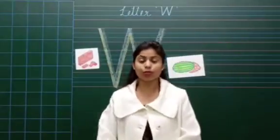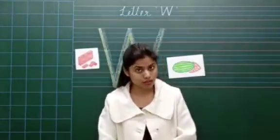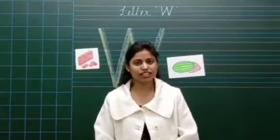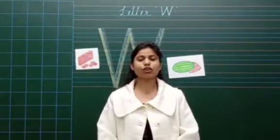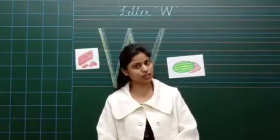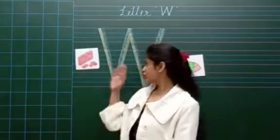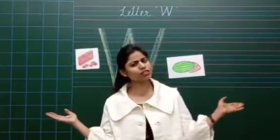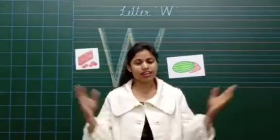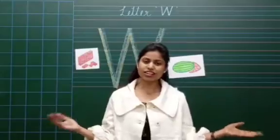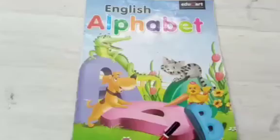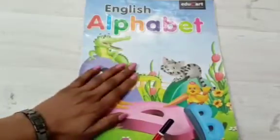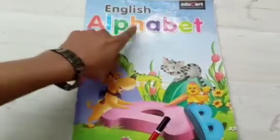So kids, I hope you enjoyed my song and you have to learn it. Now kids, take out your English reader book. We will read letter W with so many pictures from your English reader book. English alphabet.